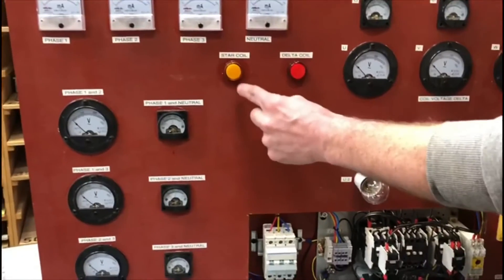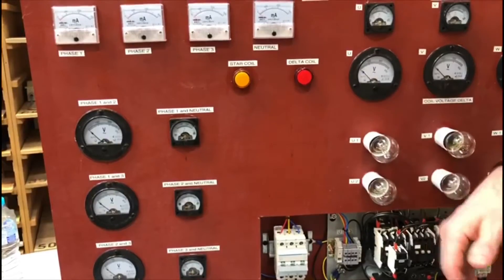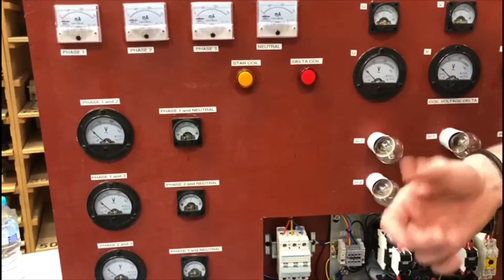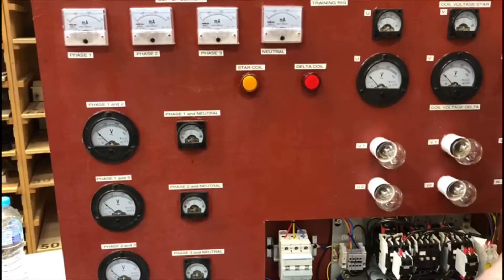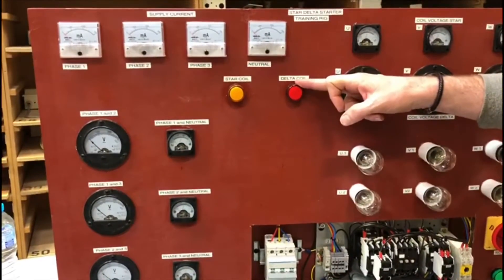We have two lights here. The amber light is when the motor or when the rig is started up in star. That's just been wired off the coil from the star contactor.